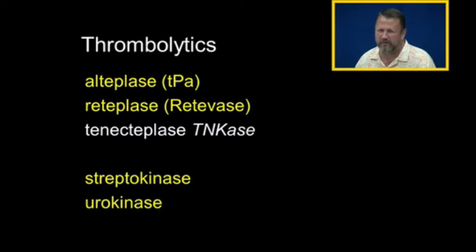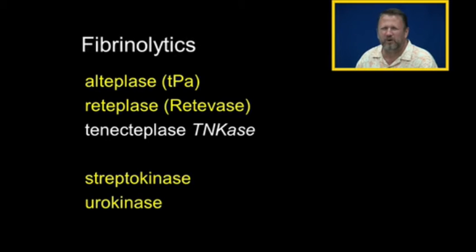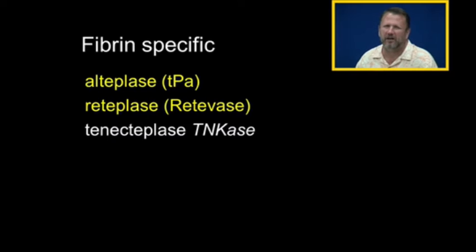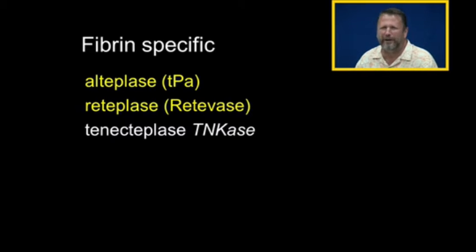These are the newer thrombolytics. The older thrombolytics were streptokinase and urokinase. You may also hear them called fibrinolytics, as in to break down fibrin. These newer agents — alteplase, retivase, and tenecteplase — are called fibrin-specific thrombolytics, or fibrin-specific fibrinolytics.